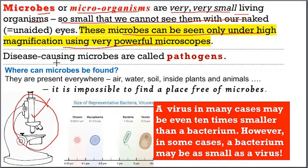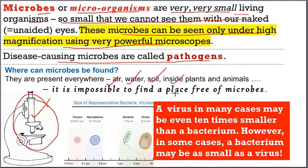Disease-causing microbes are called pathogens. Now, microbes are present everywhere — in air, water, soil, on our skin, and inside our bodies. It is impossible to find a place free of microbes.